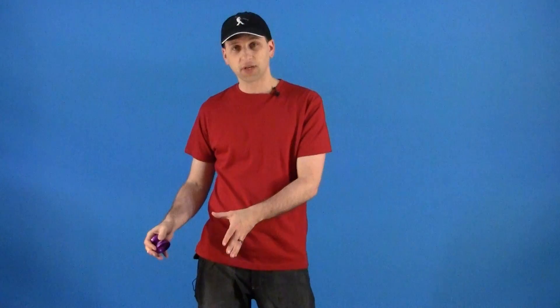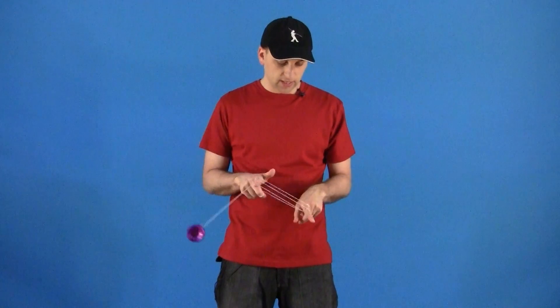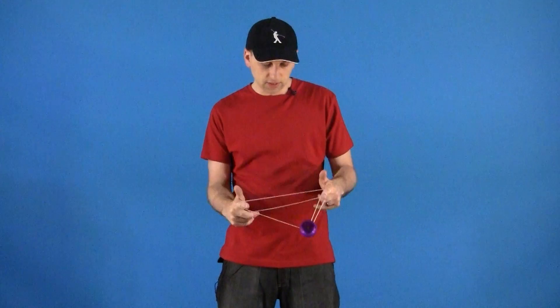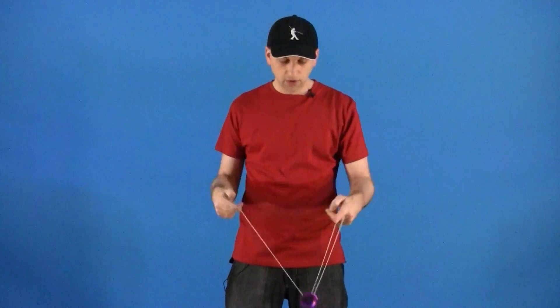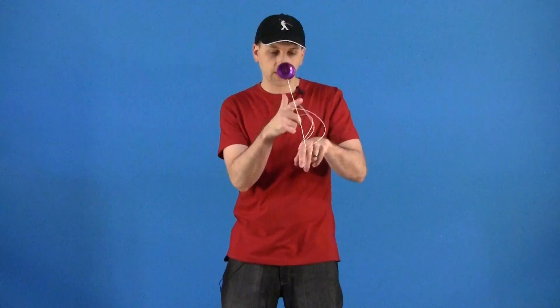This is one of those tricks that just takes tons of practice to get down. I learned it by just practicing the first half all by itself until I got a lot better at doing these types of hops, just bringing the yoyo down. Then once I got that down pretty well I would start with a trapeze and work on the second half of the trick.